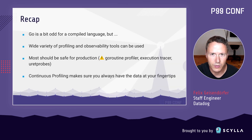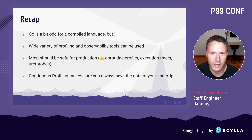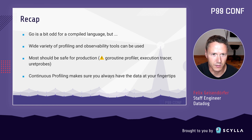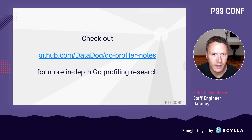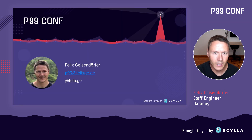To recap: Go is a bit of an odd language among compiled languages, but there's a wide variety of profiling and observability tools available. For production usage I recommend all built-in profilers except the goroutine profiler, which requires caution. The same caution applies to the built-in execution tracer. You can use Linux perf and eBPF with Go, but stay far away from uretprobes. Regardless of tool choice, I highly recommend continuous profiling so you always have data at your fingertips. Check out my profiler-notes project on GitHub for ongoing research. Thank you!